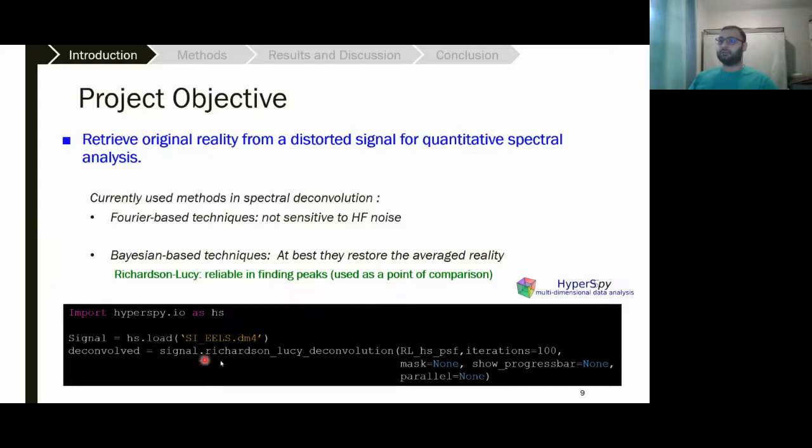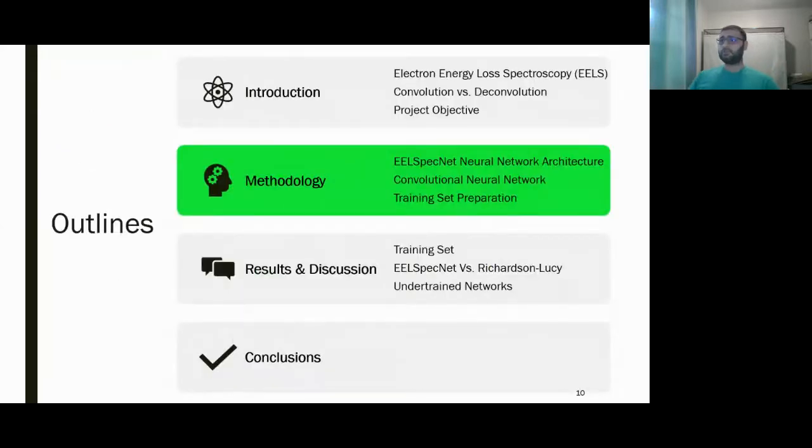In here, we use Richardson-Lucy to compare the data we obtained from EELSpecNet and see how EELSpecNet performed with respect to the method currently used in the community. For applying Richardson-Lucy, we use a HyperSpy Python toolbox. You can see it is very simple, one line of code.